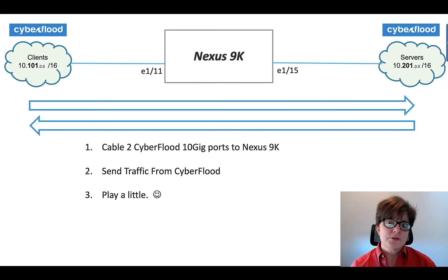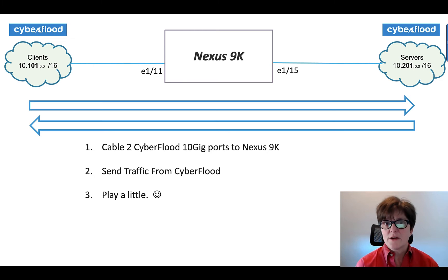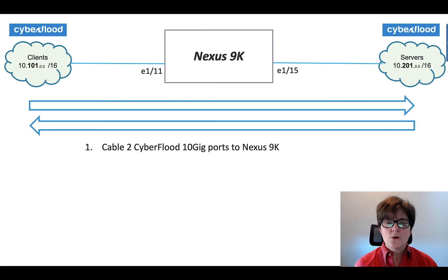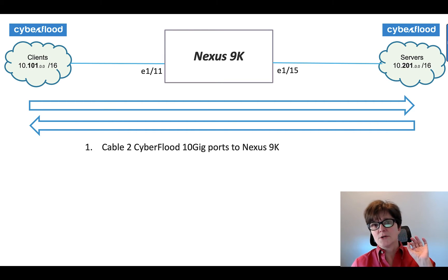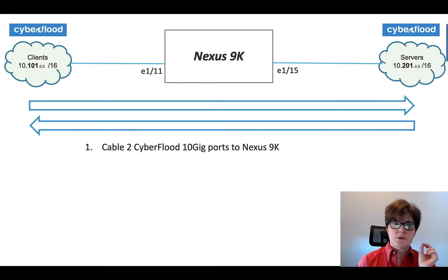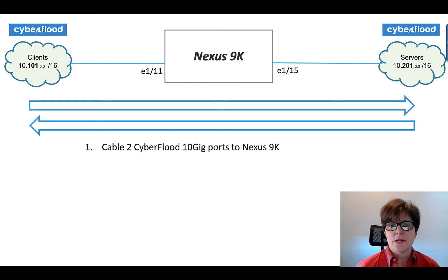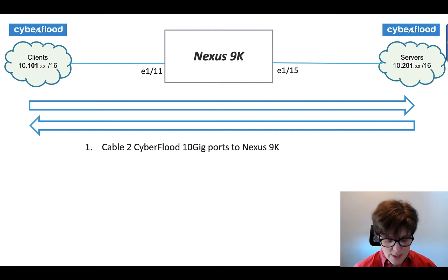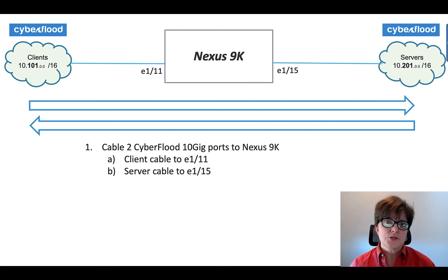What we're going to do is cable this up to the Spirent C100 CyberFlood to the Nexus 9K, send some traffic, create some stuff over on the CyberFlood, and then play a little bit. First we're going to cable two CyberFlood 10 gig ports to our Nexus. I'm going to connect a 10 gig cable from the C100 on one port over into my Nexus on E1/11, and then do the same thing on the server side.